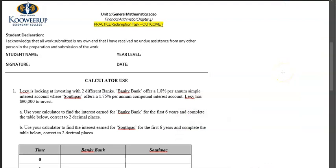Let's go ahead and look at the first question. Lexi is looking at investing with two different banks. There's Banky Bank that offers a 1.8% per annum simple interest account, where SouthPac, which is a parody of Westpac, offers a 1.75% per annum compound interest account. Lexi has $90,000 to invest. We're going to use our calculator to find the interest earned for Banky Bank for the first six years and complete the table below to two decimal places, and we're also going to do this for SouthPac.